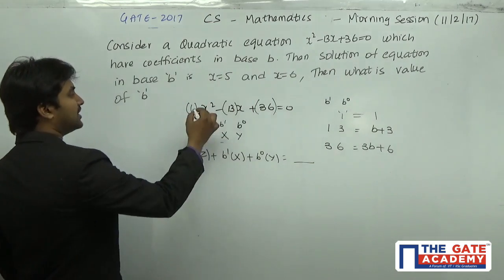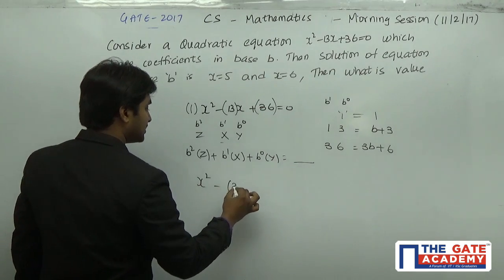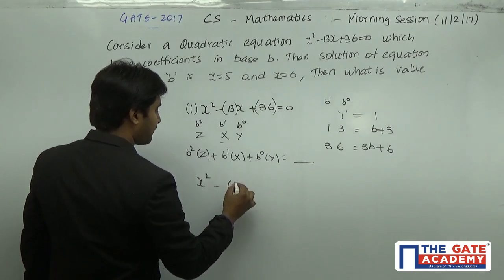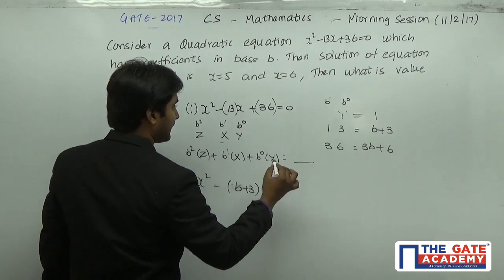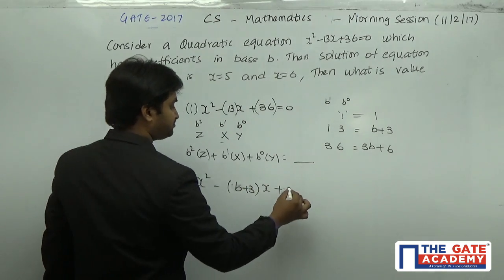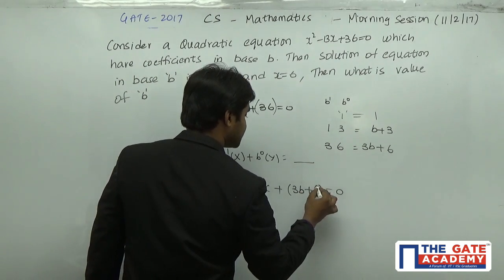Now what I am going to do is in the quadratic I am going to replace that: x² - (B + 3)x + (3B + 6) = 0. This is the quadratic expression.